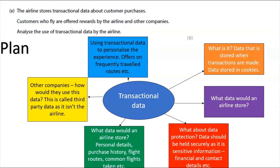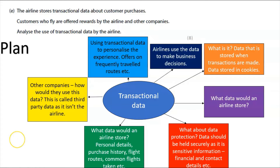Think about offers on frequently traveled routes — how can we personalize the experience for the customer? We have data about where they fly and how often they fly, so we use that to personalize what we offer. Then think about how airlines use that data to make business decisions. That plan has taken a few minutes but it will really help construct the answer.